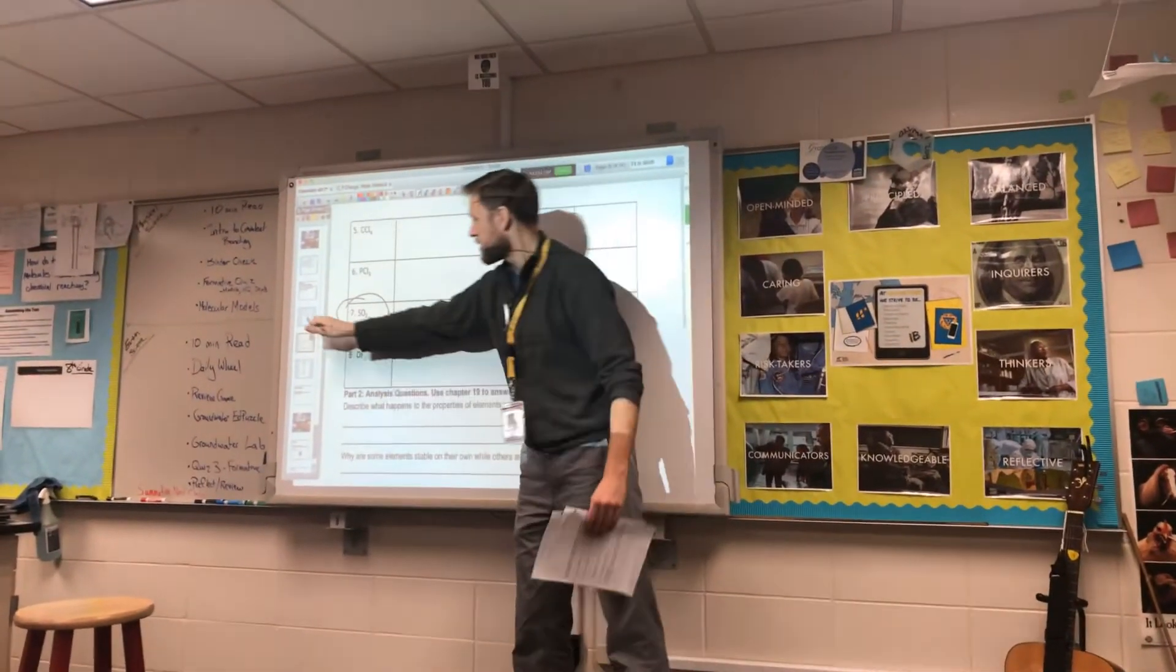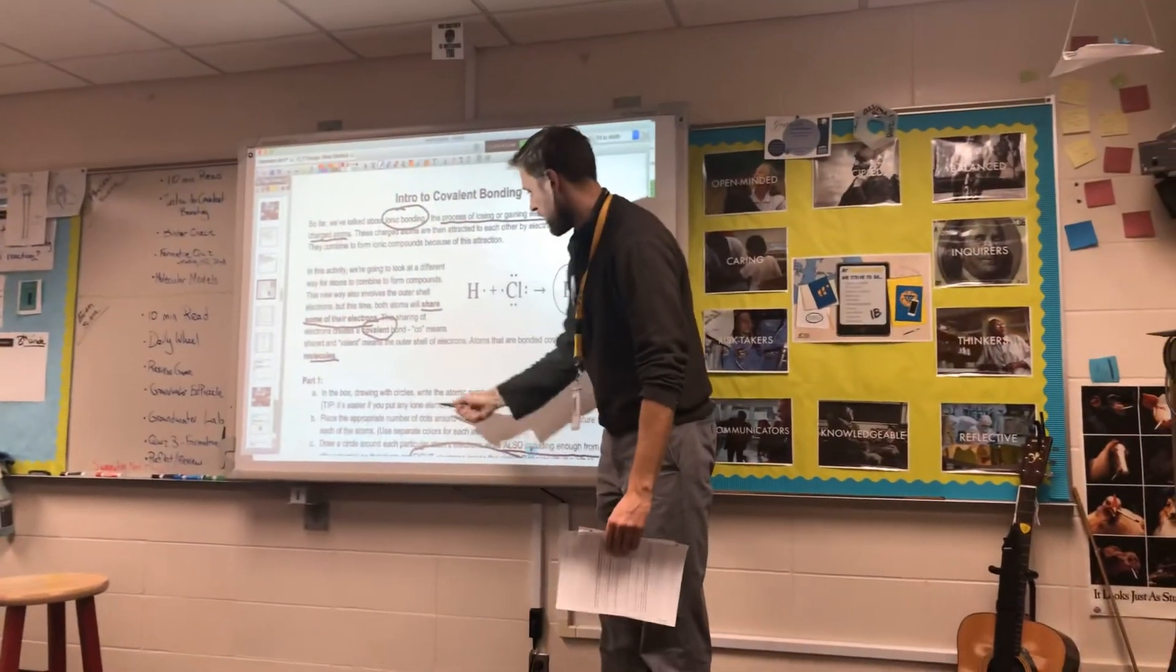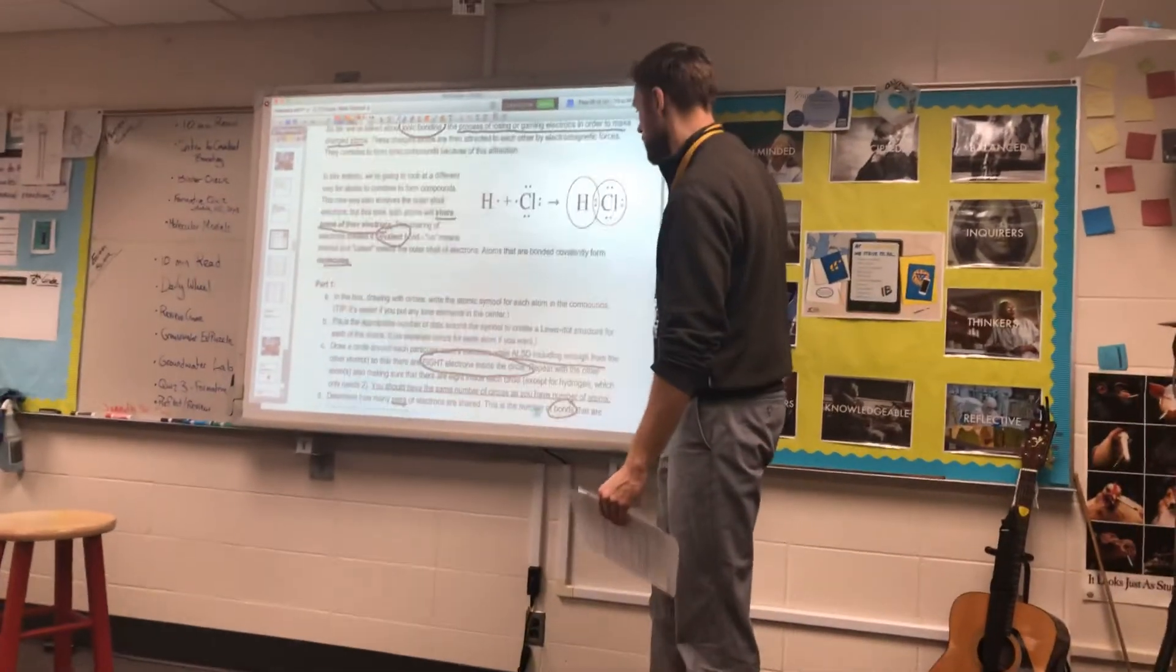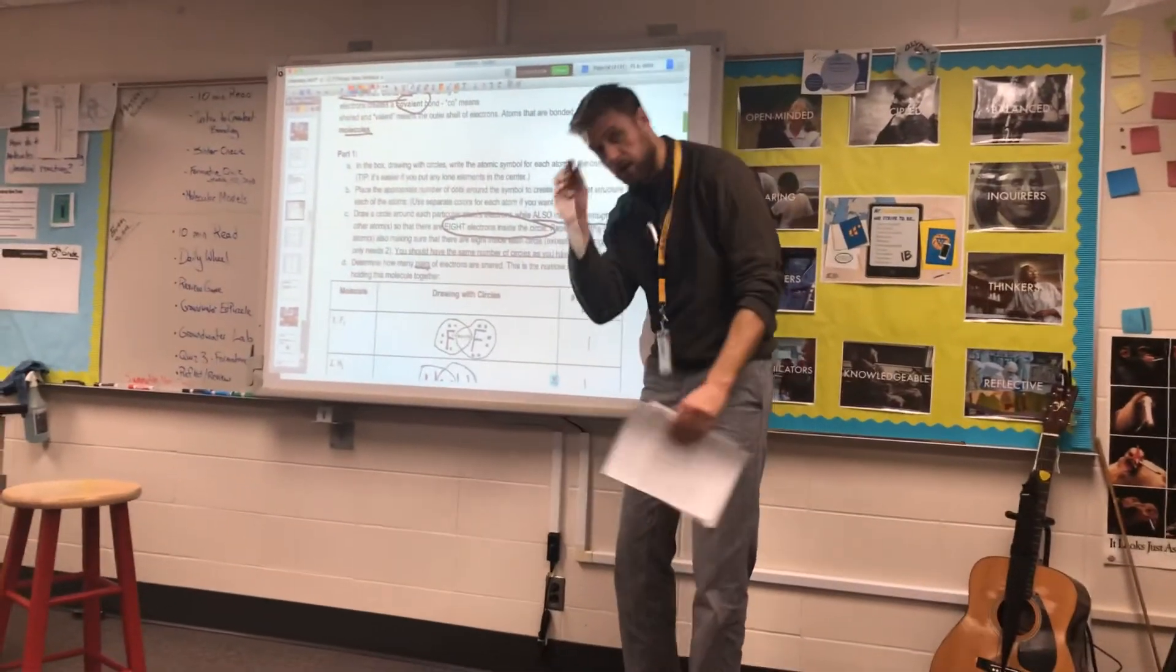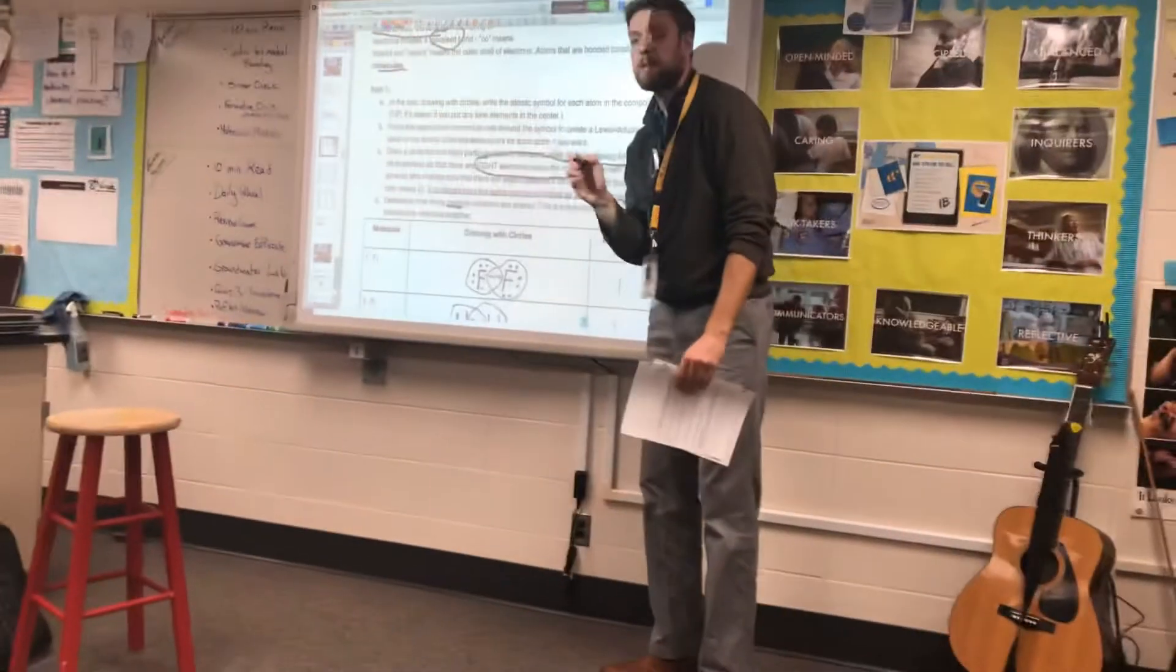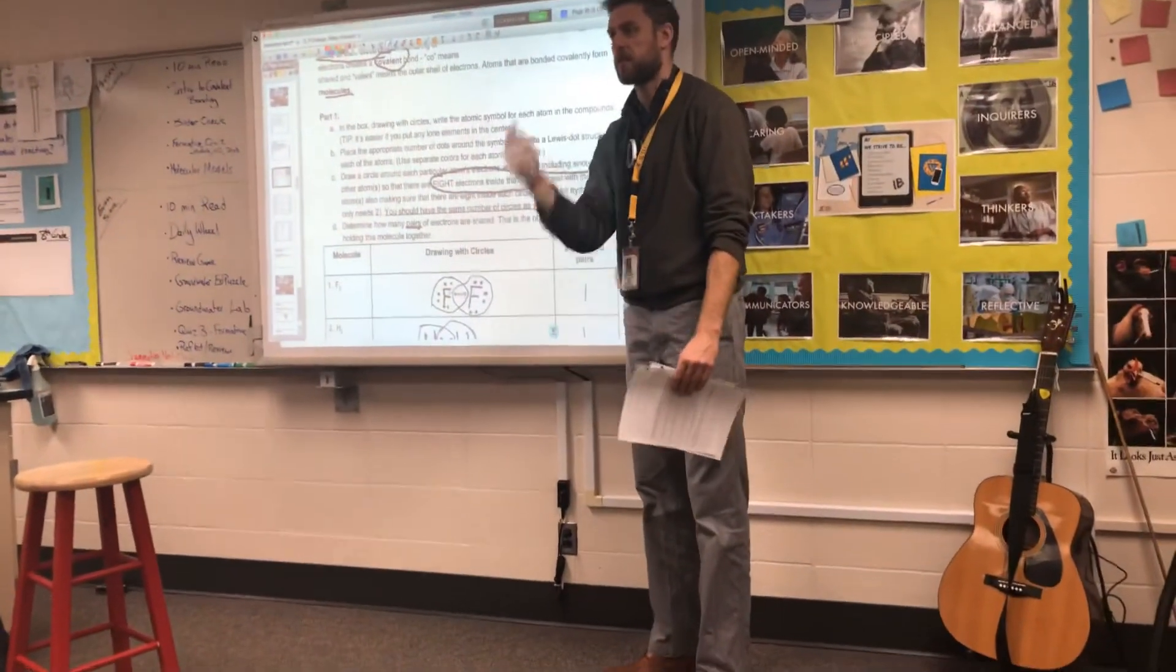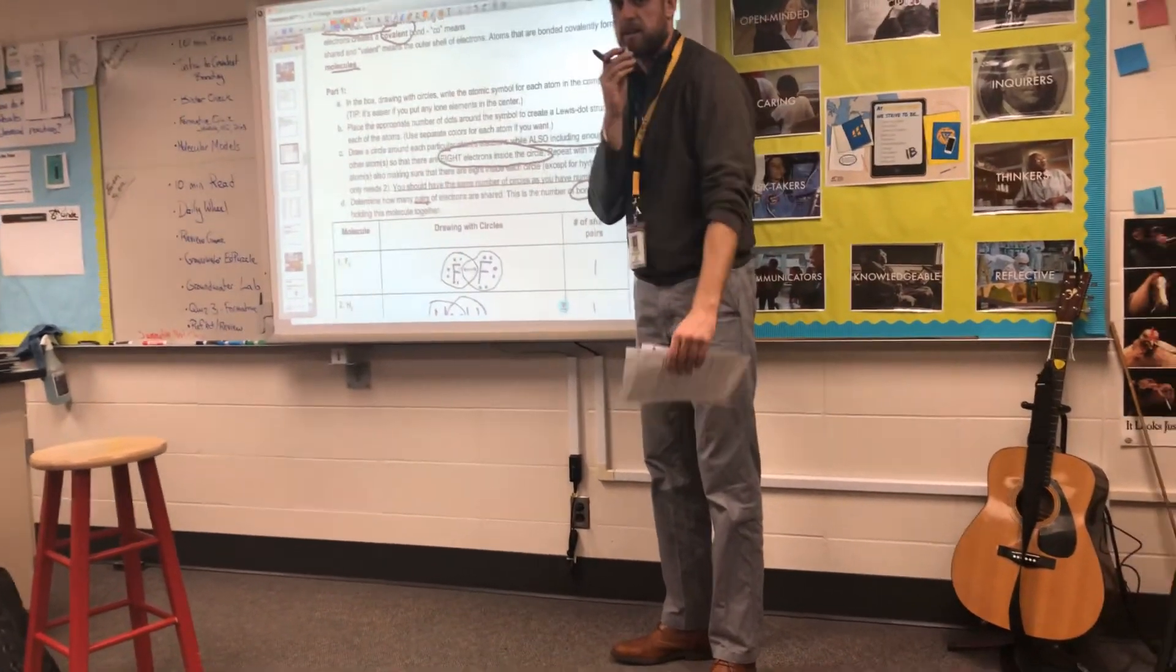But the rest of them I think you'll be able to get. Remember your tips up here in the instructions about keeping the, if it's got a lone atom, put it in the center, you need a valence shell. You need a circle valence shell for every single atom. Make sure you got one nucleus and then the right number of electrons. On your mark, get set, go.